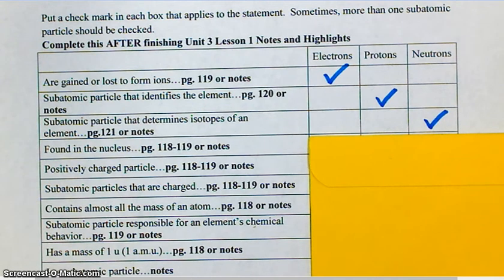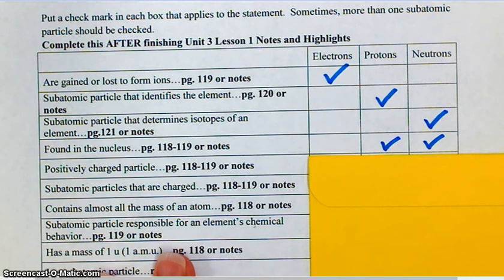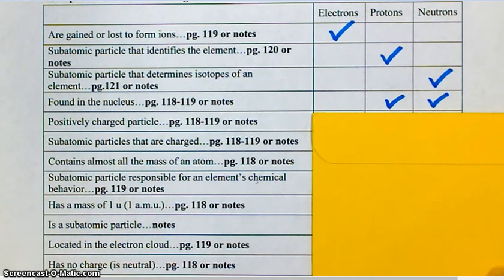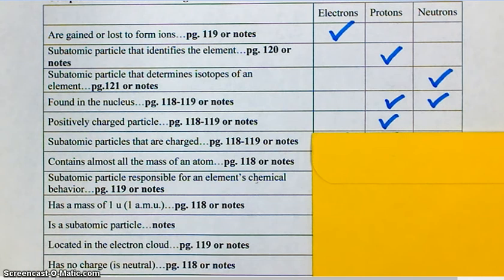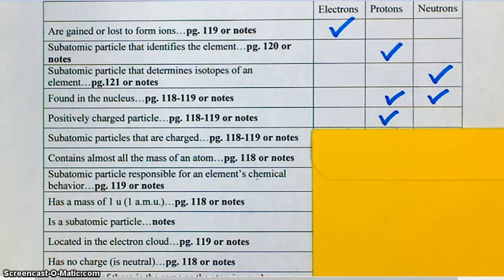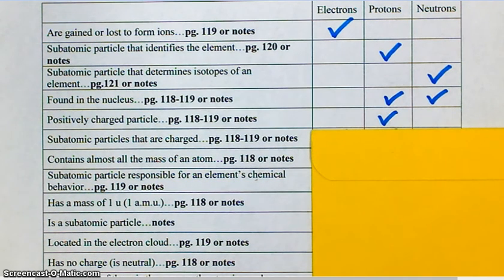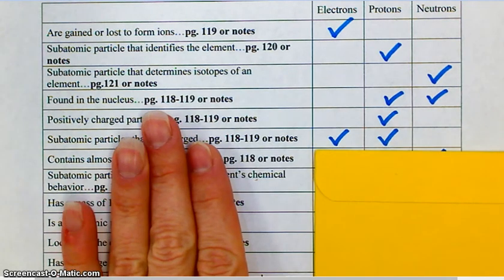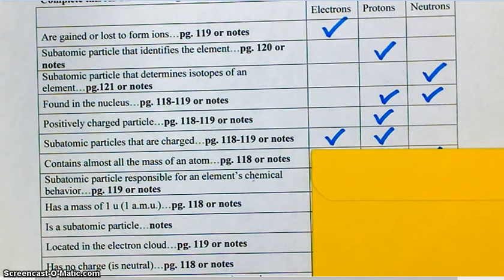Found in the nucleus? Protons and neutrons. Subatomic particle or subatomic particles that are charged. Electrons have a negative charge. And what else? Protons, which have a positive charge. So protons and electrons. Neutrons have no charge whatsoever.